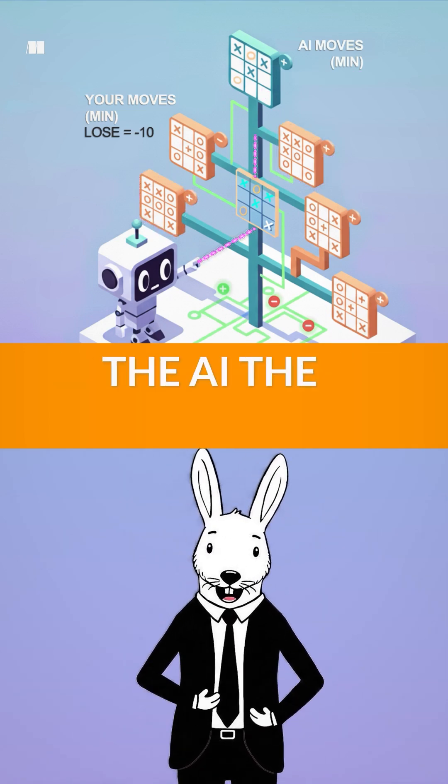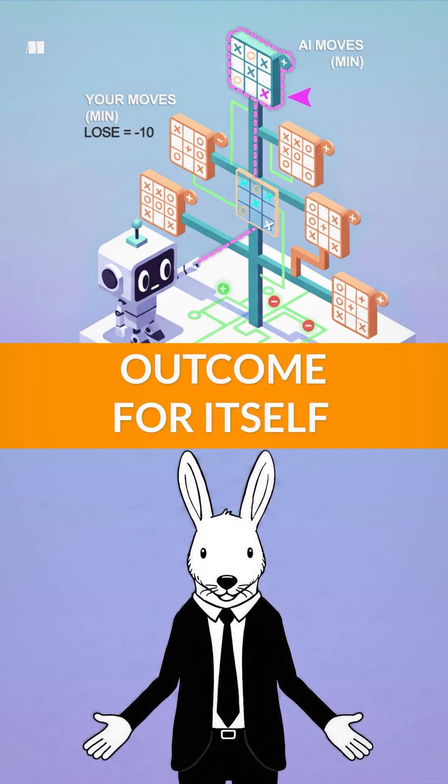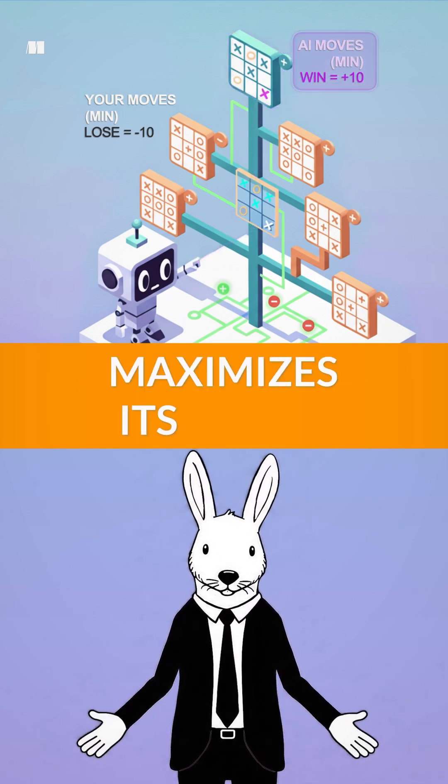Knowing what you'll do, the AI then chooses the move that leads to the best possible outcome for itself, the one that maximizes its score.